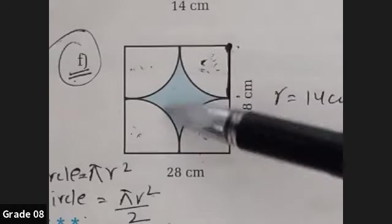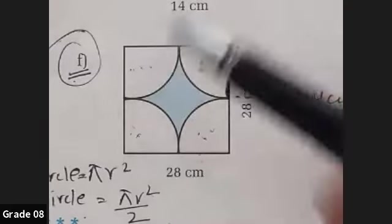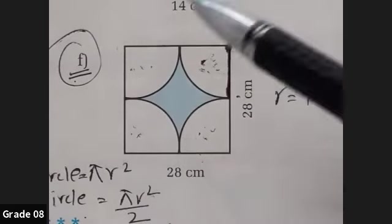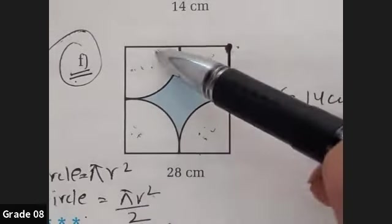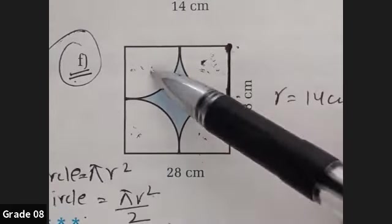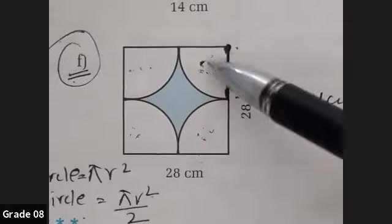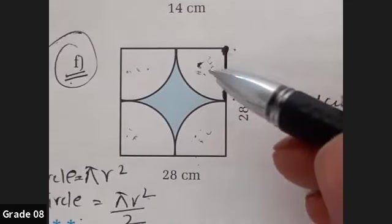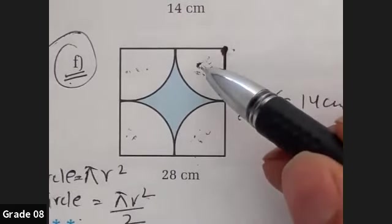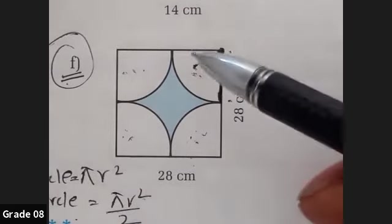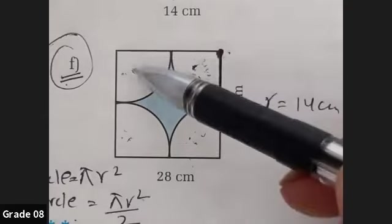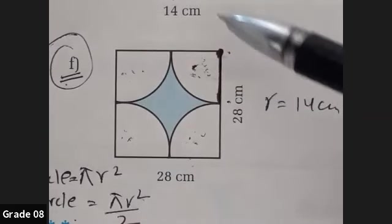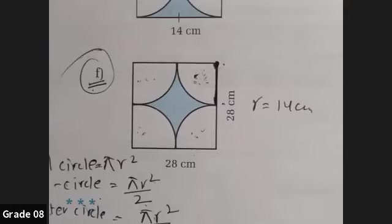First we have to find the technique. We need to find the external area — the outer boundary is a square. Inside there are four white parts. To find the area of these white parts, we recognize that each is a quarter circle. First find the area of one quarter circle, then multiply by four to get all four quarter circles, then subtract from the area of the square. I'm going to show you the full process.